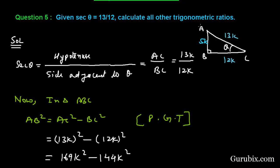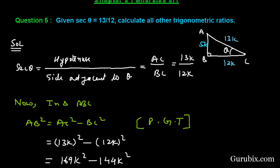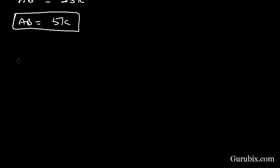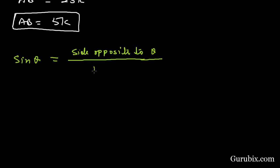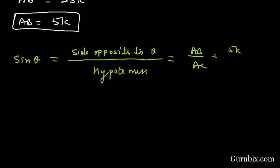Now we shall find the other trigonometric ratios. Sine theta equals the side opposite to theta over hypotenuse, which is AB over AC. This equals 5K over 13K, so sine theta equals 5 over 13.